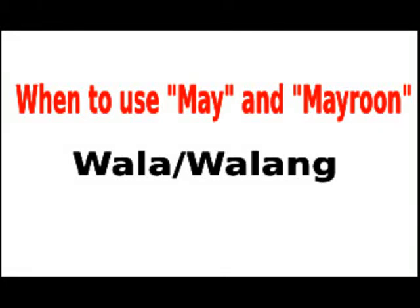Using 'may' and 'mayroon.' Sentences with the words 'may' or 'mayroon' point to the existence or possession of things. Although both can mean 'there is' or 'there are' and 'has' or 'have,' the two words cannot be used interchangeably. How to use 'may'? May is followed immediately by a noun to show possession or existence. 'May' sentences often do not explicitly mention the possessor.